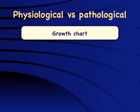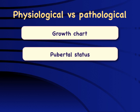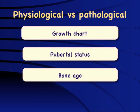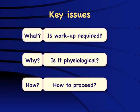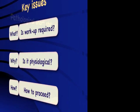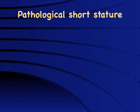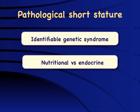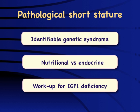To determine whether growth failure is physiological or pathological, we look at three things: the growth chart (including pubertal status, bone age, height age, weight age, and mid-parental expectation), which allows us to broadly classify children into familial, constitutional delay, or pathological causes. Pubertal status and bone age assessment are absolutely vital. Once pathology is identified, the next question is: what is the real cause? We look for identifiable genetic syndromes, nutritional causes, endocrine causes, and whether to work up for IGF-1 deficiency such as growth hormone deficiency or resistance.